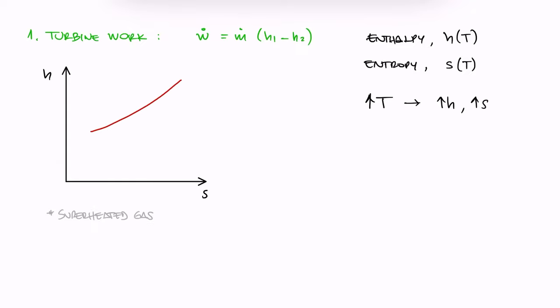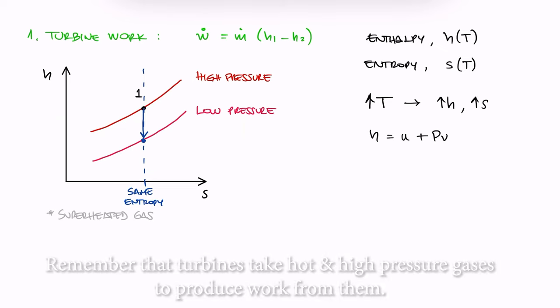And since enthalpy is directly related to pressure, we know that this relationship shows a higher curve for a high pressure and a lower curve for a low pressure. Starting anywhere at 1, we can easily see that for an isentropic case, the process would be a vertical segment going down to state 2.